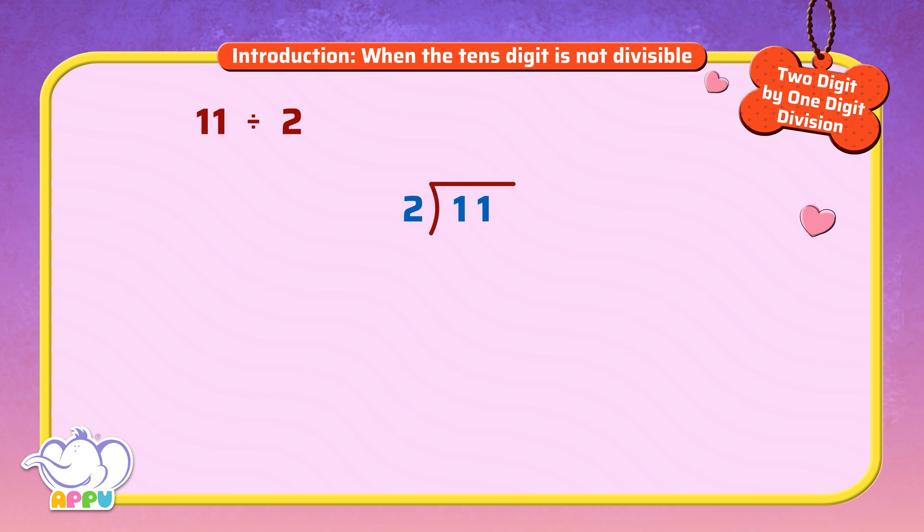Step 1. We cannot divide one by two since one is smaller than two. So we consider the ones digit as well.